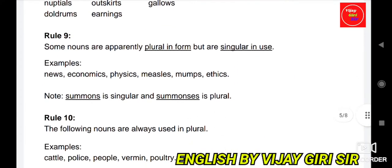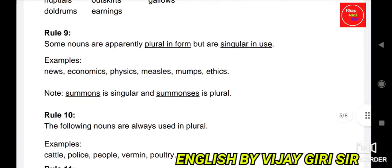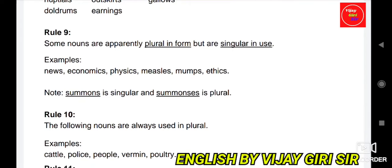Rule 9: Some nouns are apparently plural in form but are singular in use. For example: news, economics, physics, measles, and mumps, ethics — these have an S ending and look plural, but they are used as singular. Note: 'summons' is singular and 'summonses' is plural.